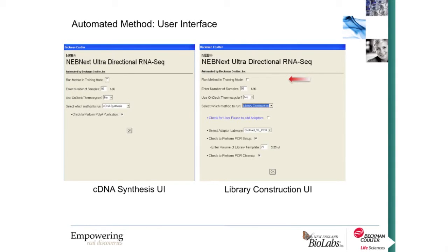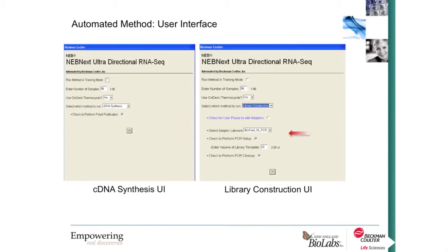The library construction UI also has a training mode option, a number-of-samples input, and the option of on-deck or off-deck thermocycling. Additional options include a user pause to add the adapter plate to the deck, the option to deploy adapters in custom-designed labware — in this case a BioRad hard-shell 96-well plate — whether or not to perform PCR setup, how much volume of pre-enriched library to use as template, and whether or not to perform PCR cleanup. It's a very intuitive user interface that makes operation of this method quite simple.